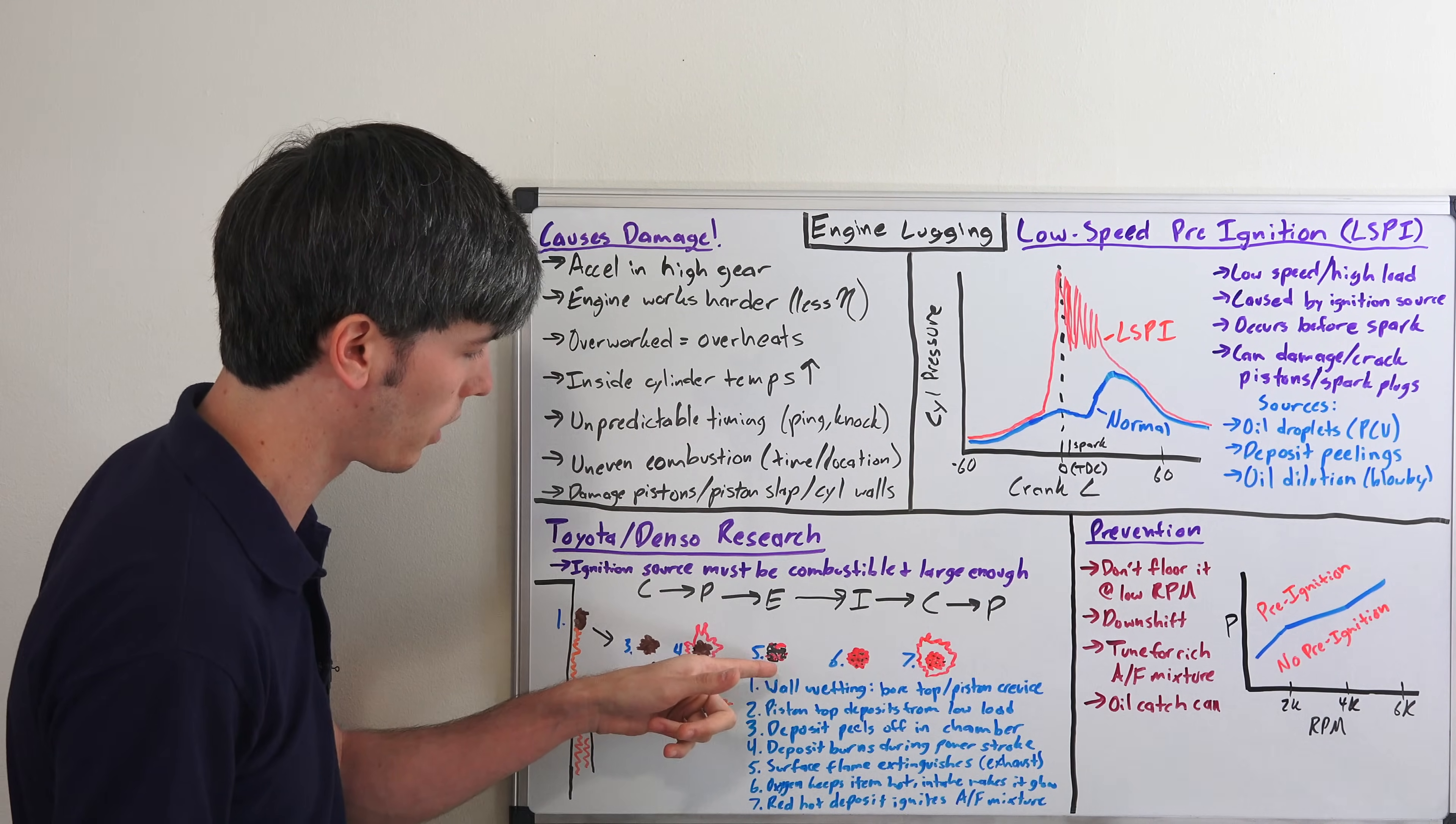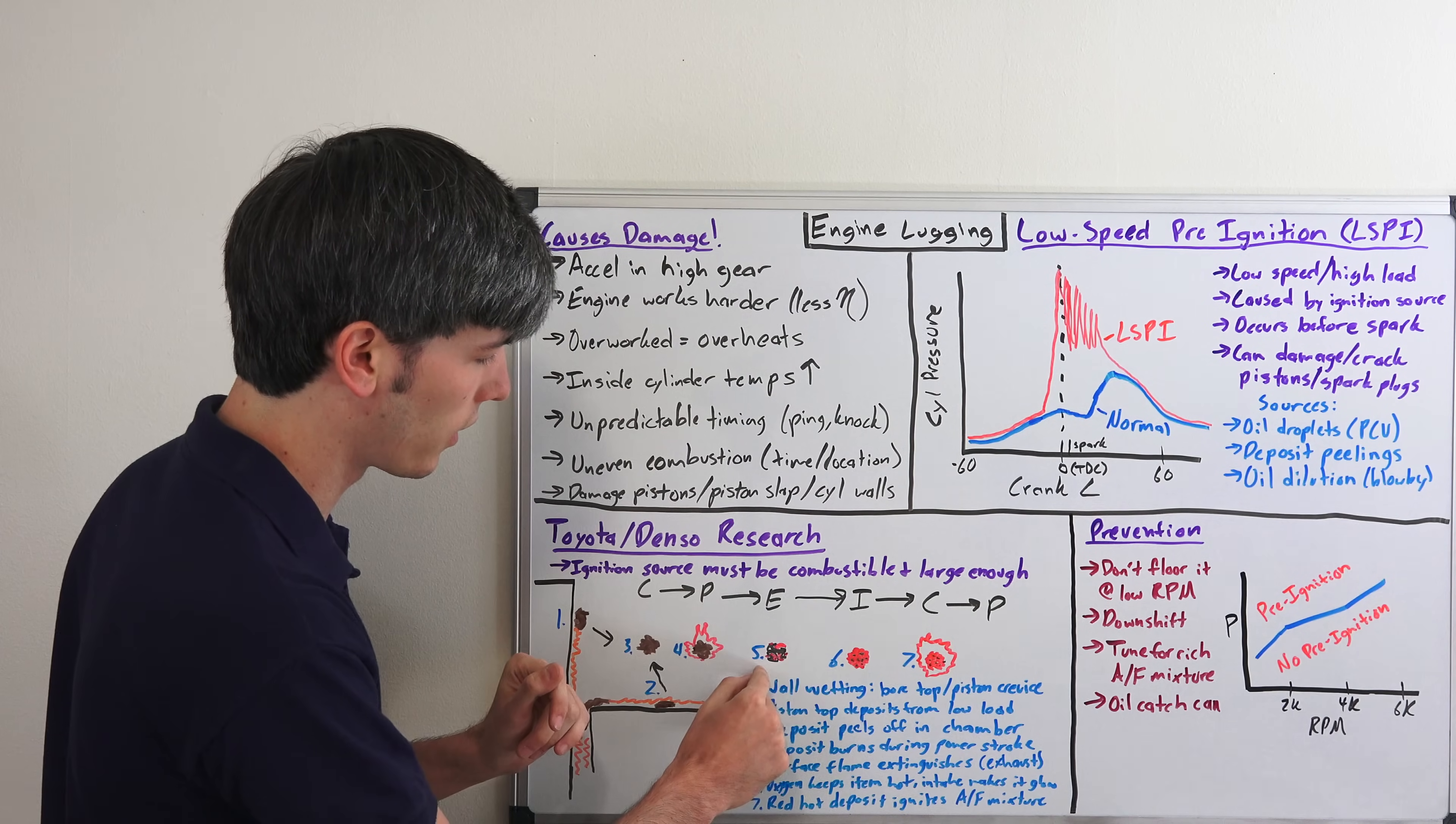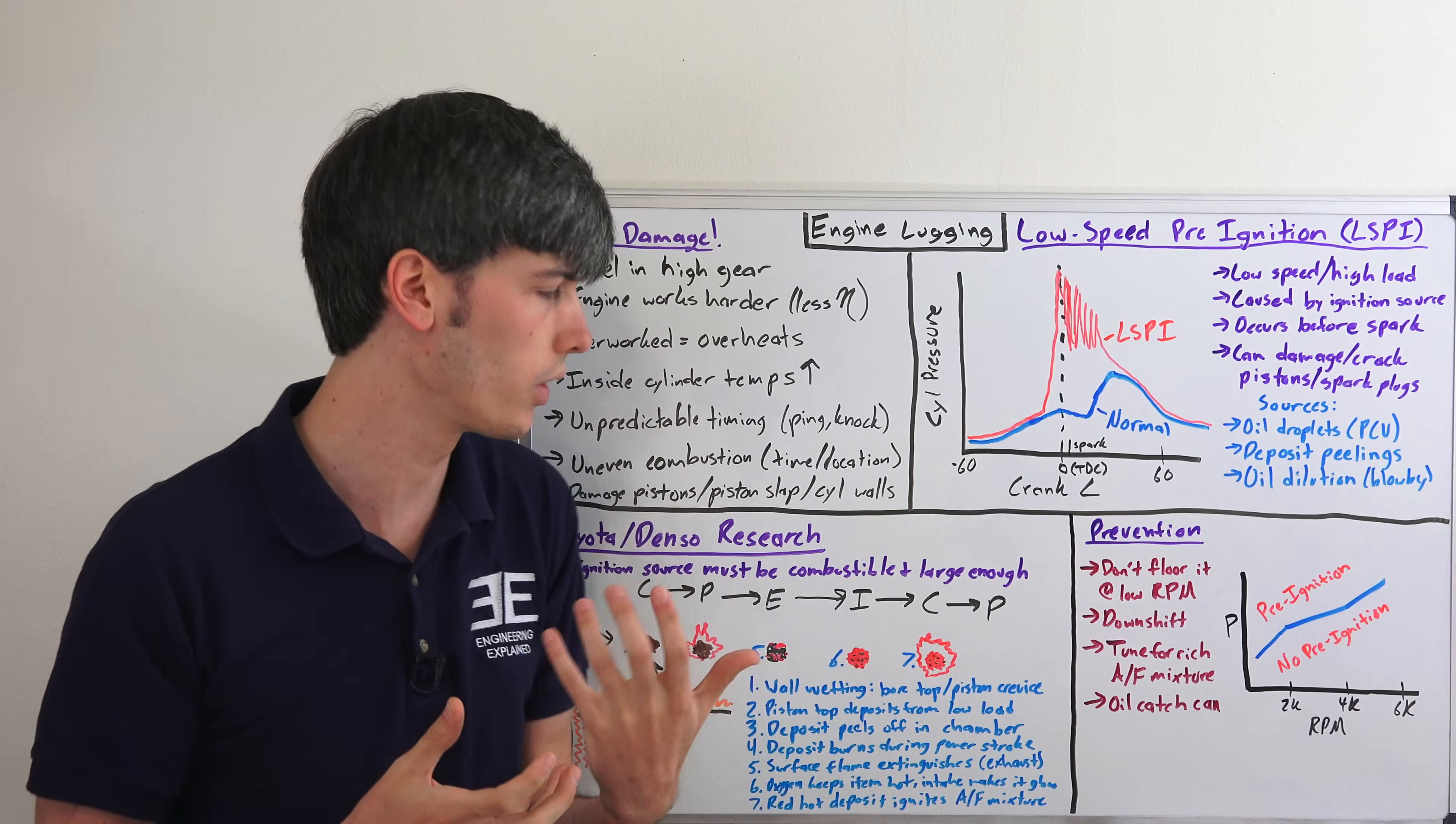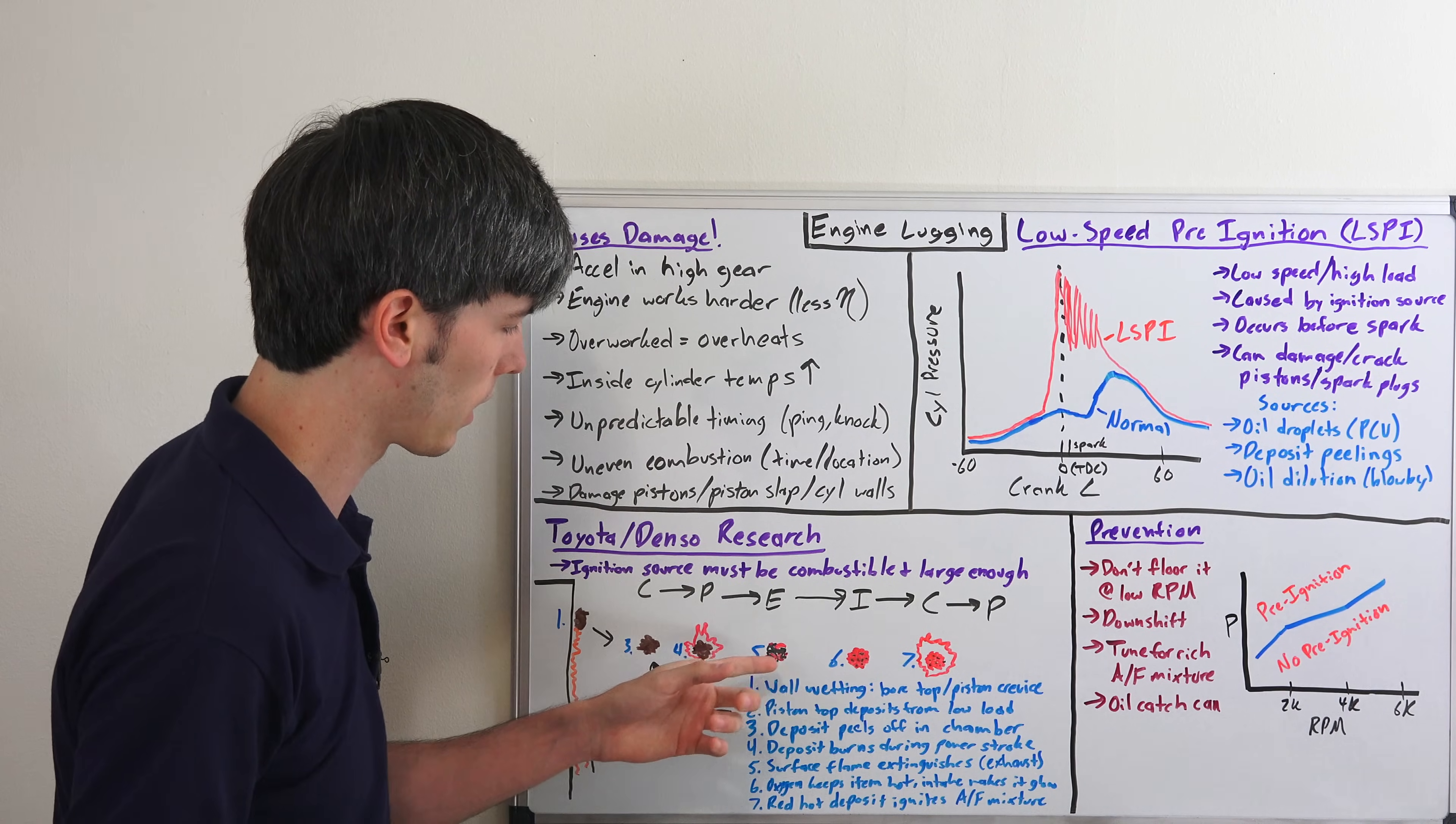But we're assuming that it remains within the cylinder, which isn't all that unlikely. The surface flame is extinguished now, but it's still kind of glowing because there's some remaining oxygen in that mixture, not all of it burnt completely. That oxygen is reacting with the deposit and keeping it glowing.